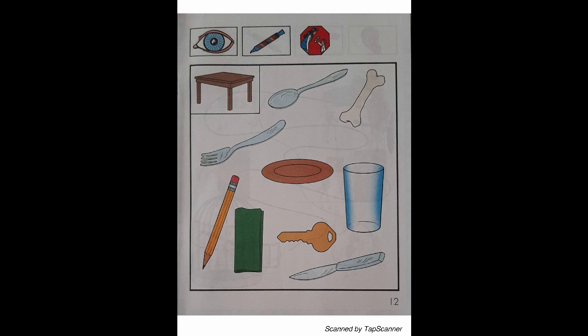Pacework to be completed. Science Pace, RR06, page 12. Table setting review. Look carefully at the objects on page 12 to see which ones belong on the table when Christy sets the table for her mother. Which objects belong on the table? Which objects do not belong on the table? With your brown marker, cross out the objects that do not belong on Christy's table.